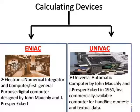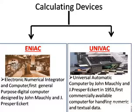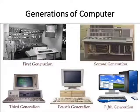The last two calculating devices are ENIAC and UNIVAC. Both were invented by John Mauchly and J. Presper Eckert. ENIAC stands for Electronic Numerical Integrator and Computer — it is the first general-purpose digital computer. UNIVAC stands for Universal Automatic Computer — it is the first commercially available computer for handling numerical and textual data.